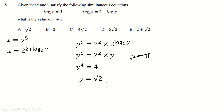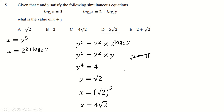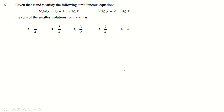We end up with y as the square root of 2, because root 2 times root 2 times root 2 times root 2 is 4. Then we're being asked for x plus y, so we need x first. x is y to the power 5, which is root 2 to the power 5. Root 2 to the 4 was 4, so another root 2 makes this 4 root 2, and root 2 plus 4 root 2 is 5 root 2 — that's our answer.